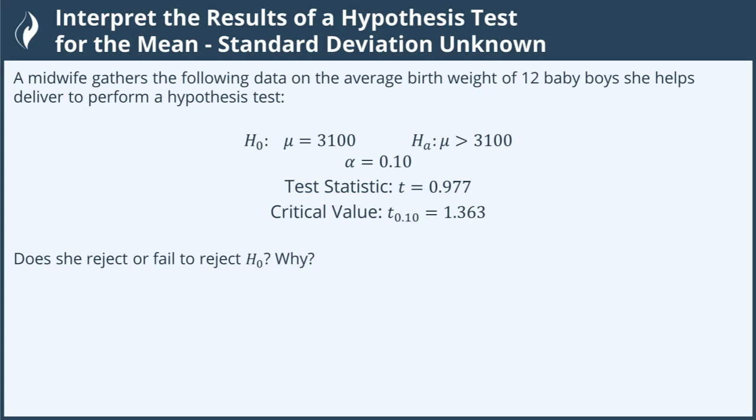This question is asking us to interpret the results of a hypothesis test. Here we're actually given the results - the null hypothesis, the alternative hypothesis, the test statistic, and the critical value.